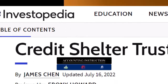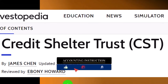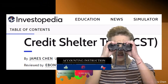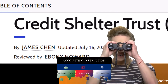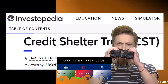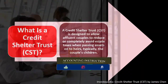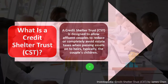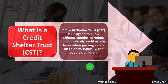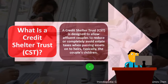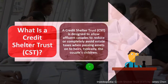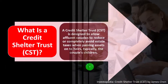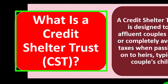Most of this information comes from Investopedia's article on Credit Shelter Trust (CST), written by James Chen and updated July 16th, 2022 — you can find it online. In prior presentations we've been looking at estate planning and focusing on particular tools used in estate planning. This time that tool is the Credit Shelter Trust. First question: what is a credit shelter trust?